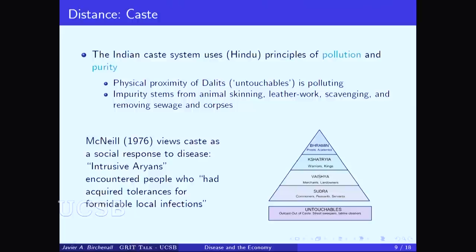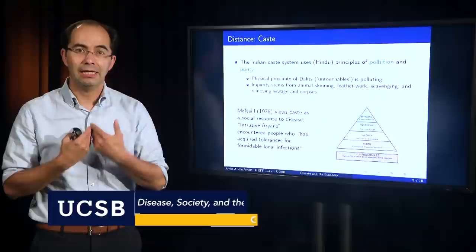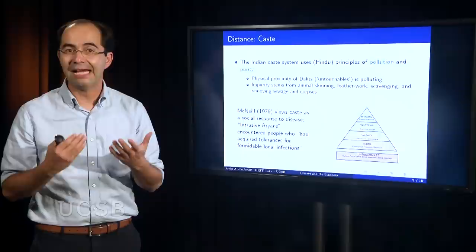One of the functions of caste, not just the specialization and production of labor, is also the regulation of distance, direct and indirect distance. In that system, the physical proximity to particular individuals is polluting. Think of this as individuals that are outcast in the system. Now, impurity often comes from particular production tasks. Production tasks like animal skinning, leather work, scavenging, removing sewage or corpses. All those polluting tasks are avoided, and are avoided to extremes.